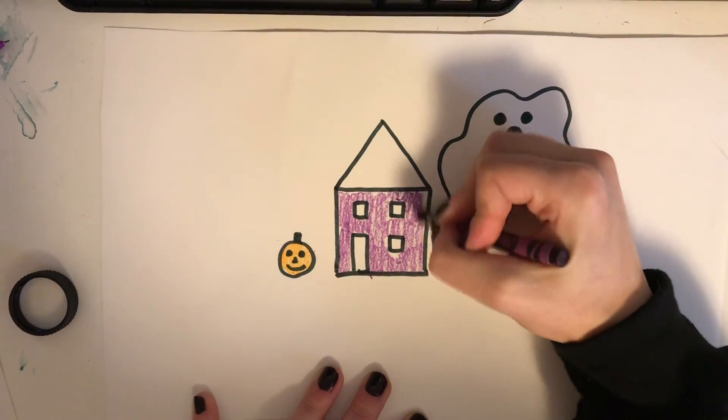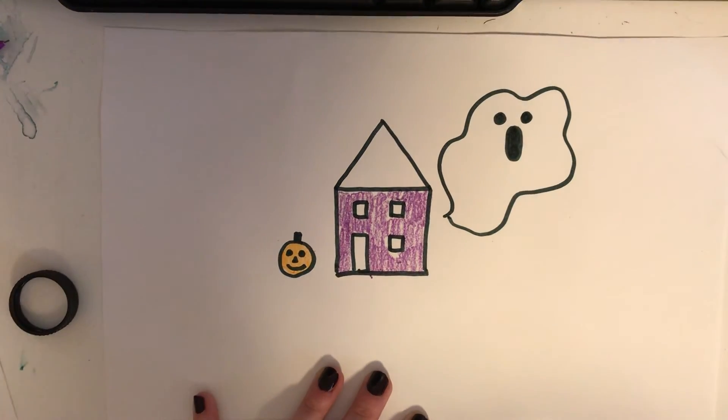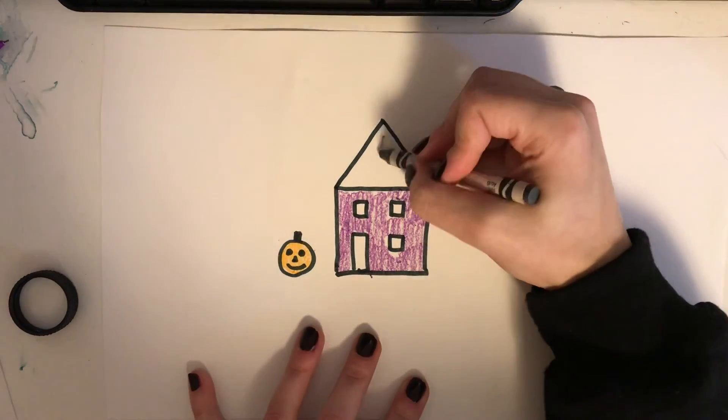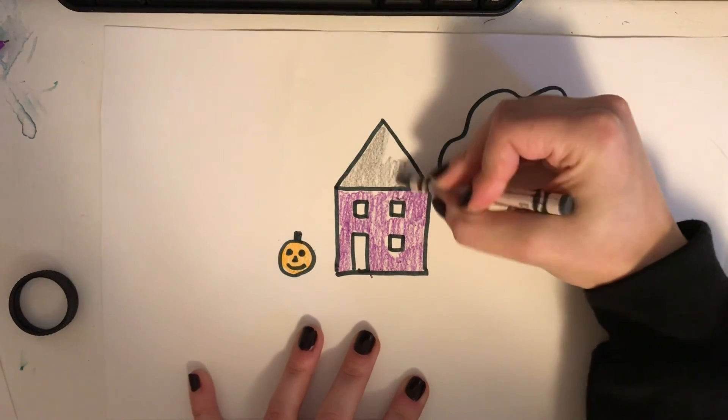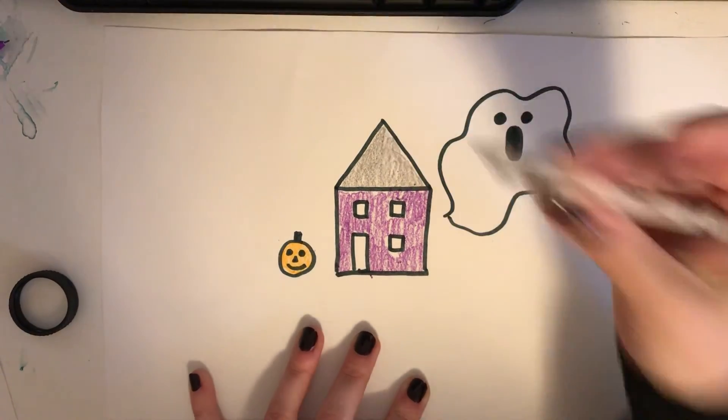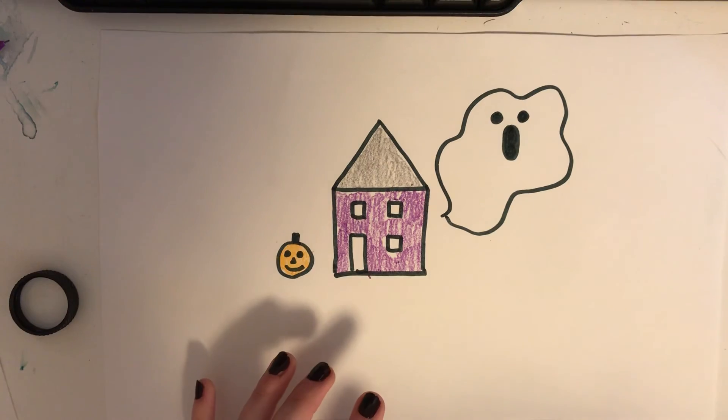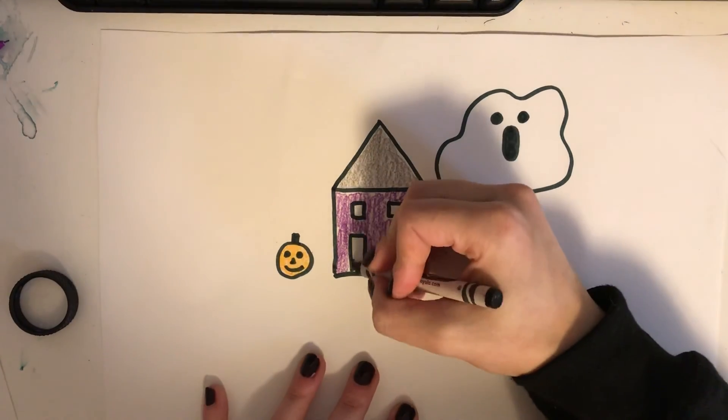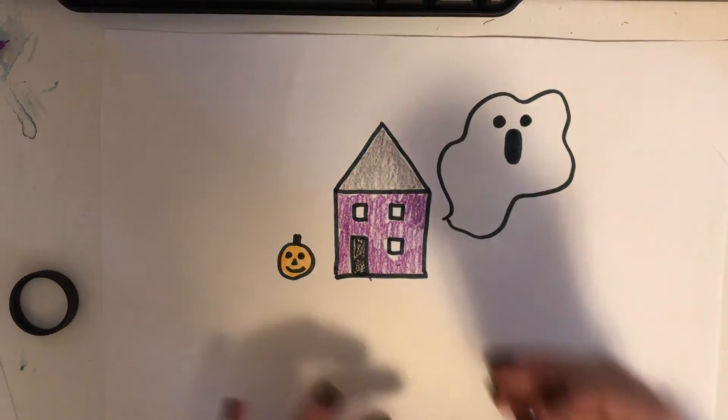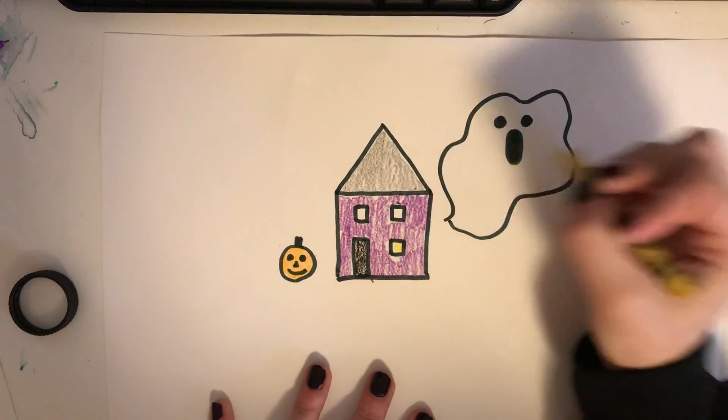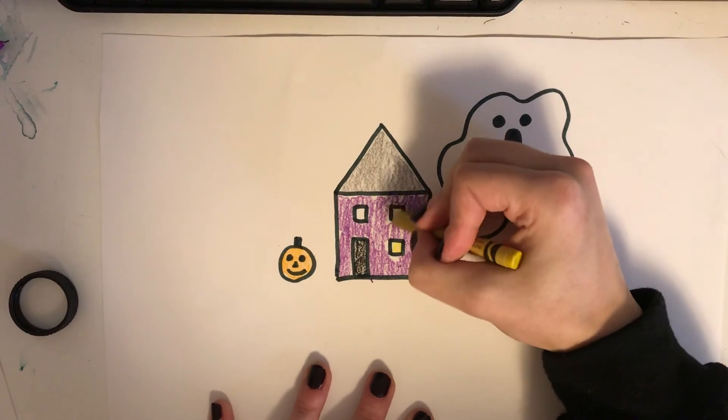I'll make a purple house and add a gray roof. A black door—that might be spooky and scary. I'm going to make my windows yellow so you can tell there's someone inside, even if it's just some more ghosts.